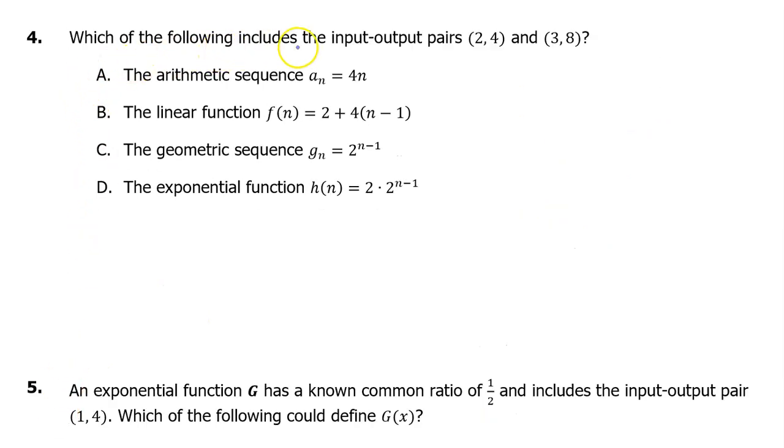Number 4. Which of the following includes the input-output pairs (2, 4) and (3, 8)? Let's evaluate option A at 2 and see if we get 4. So this will become f(2), which would equal 4 times (2 minus 1), which equals 4. Wait, let me recalculate. So A is not the answer.